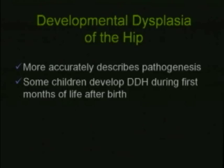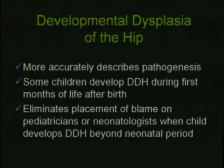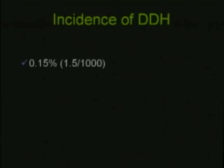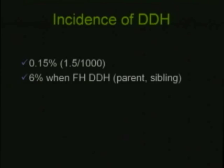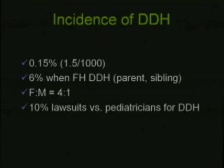It's known that some children develop DDH during the first months of life after birth, and it helps to eliminate placement of blame on the pediatrician or neonatologist when a child develops DDH beyond the neonatal period. The incidence of DDH is approximately 1.5 in 1,000 infants. The incidence is up to about 6% when there is a family history, particularly in a parent or sibling. There is four times the incidence of DDH in female babies compared to males, and 10% of lawsuits against pediatricians are because of missed DDH.